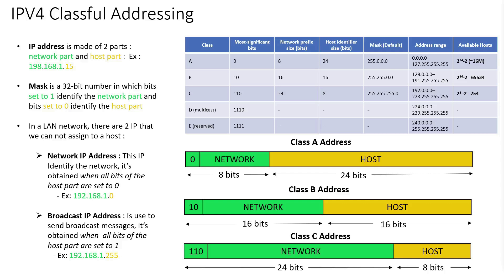If we analyze class A for example, we can see that for class A we have 8 bits for the network part and 24 bits for the host part. This is the default mask for class A, and this is the range of IPs for class A. For class A, we can have up to 2 to the power of 24 minus 2 IP addresses. This class is used when you have a lot of hosts in your local network. We remove two IPs because we remove the network IP and the broadcast IP.